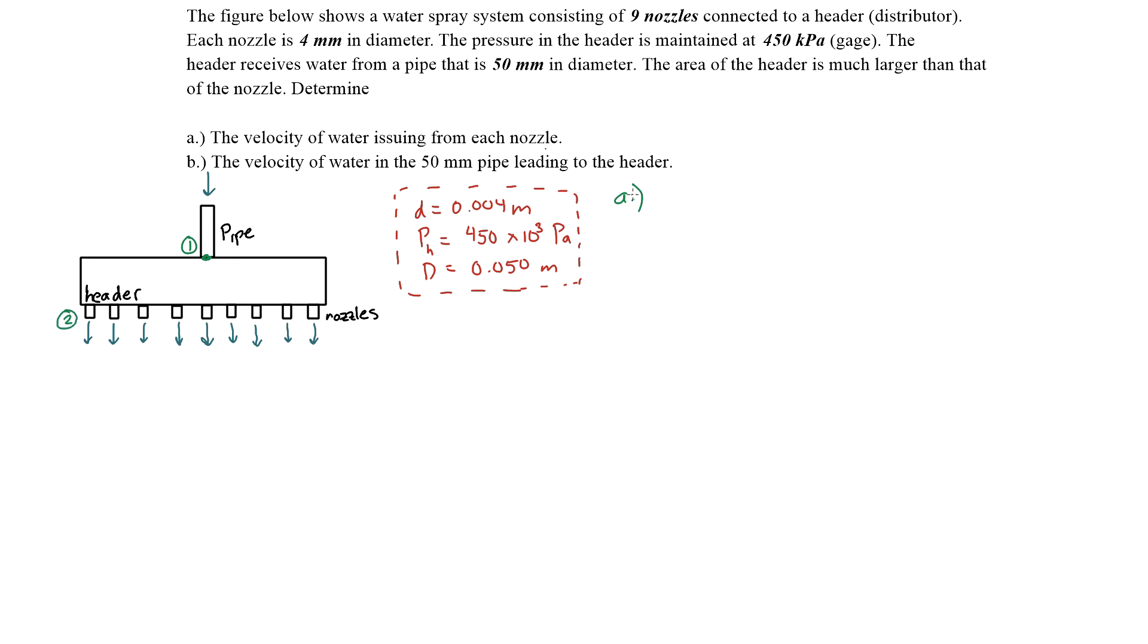Let's apply Bernoulli's equation, which is going to be P1 over rho g plus the velocity at point 1 plus the potential from point 1 equals the pressure at 2 plus the velocity at 2 plus the potential at 2. Let's begin canceling out some terms from this equation so we can find the velocity issuing from the nozzle, which is going to be the velocity at 2. Our goal is to find V2.